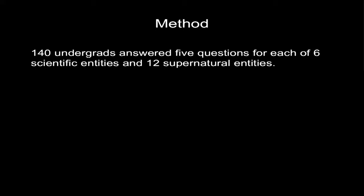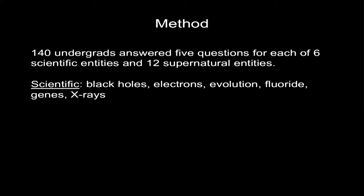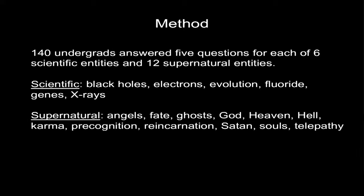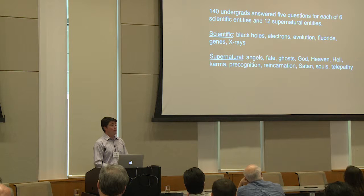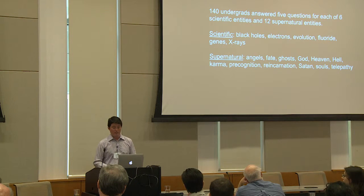In this study, we involved 140 college undergraduates from a couple of different institutions. They answered five questions for each of six scientists and 12 scientific entities and 12 supernatural entities. The scientific entities were: black holes, electrons, evolution, fluoride, genes, and x-rays. The supernatural ones were: angels, fate, ghosts, god, heaven, hell, karma, precognition, reincarnation, saints, souls, and telepathy — so not all exclusively religious.